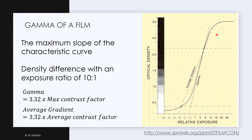While the average gradient is the average slope between two density values shown here. For medical imaging, film density values are 0.25 and 2 above the base fog density. This can be defined in terms of the average contrast factor.